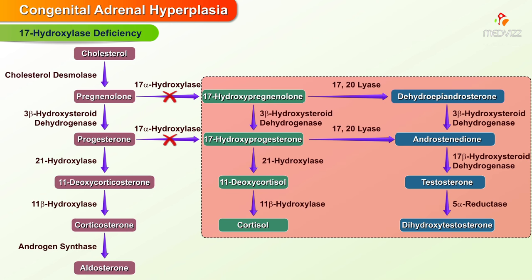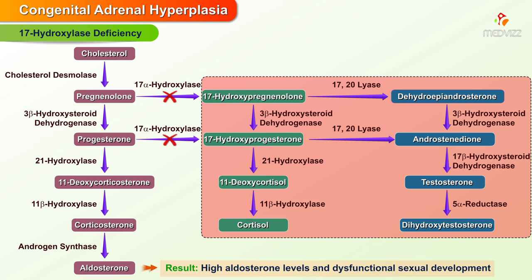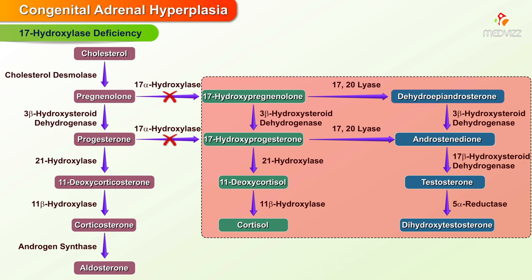17-hydroxylase deficiency: deficiency in this enzyme prevents androgens and cortisol from being formed. This results in high aldosterone levels and dysfunctional sexual development. Deficiency leads to increase in aldosterone, decrease in cortisol, and decrease in androgens.